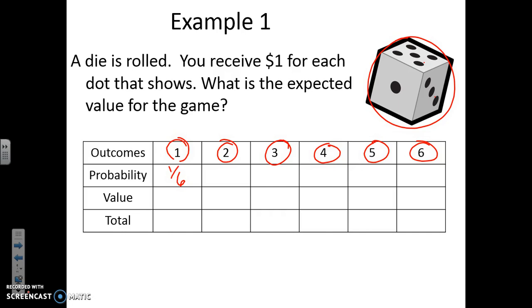For two, how many twos are on the die? One, so one out of six again. How many threes? One, so one out of six again, and one out of six again, one out of six again, and then one out of six again. Each one of those appears on the die once.